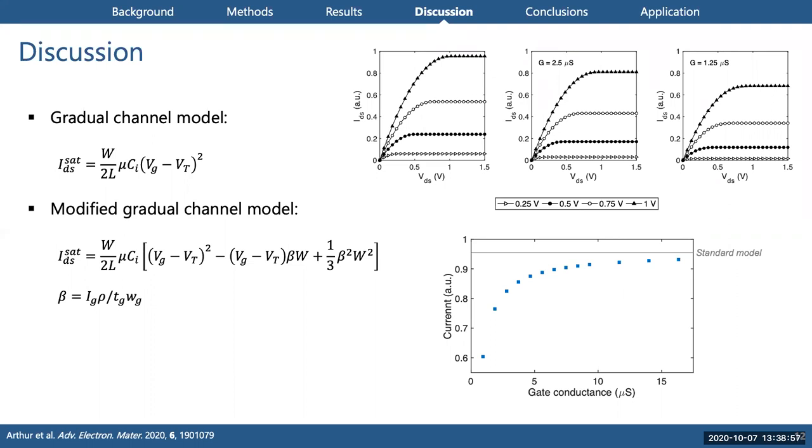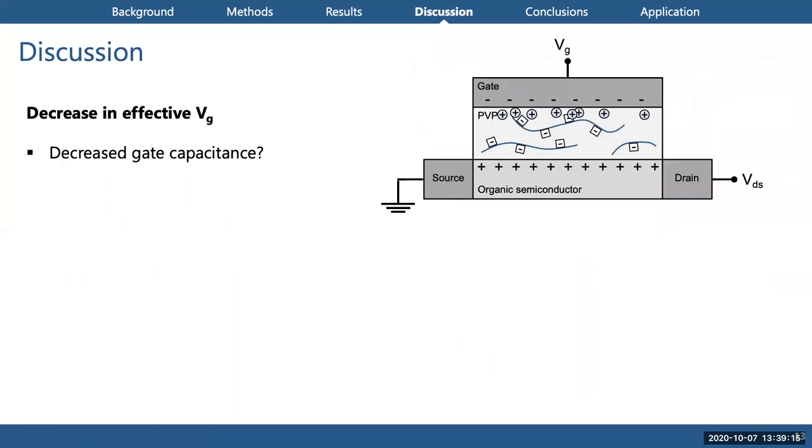When we plot it, this figure shows the simulated saturation current using a fixed gate and drain, and we're plotting it against these simulated gate conductance. We're reproducing the behavior that we observed experimentally, where the channel current increases rapidly initially and then begins to level out as gate conductance increases. The gray line here is showing the current calculated using the standard gradual channel model, and so this is what we're tending toward as we're increasing gate conductance—we're reaching that ideal situation.